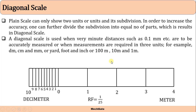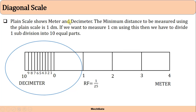A plane scale shows two units — meter and decimeter. We know one meter is equivalent to 10 decimeters. The minimum distance measurable using a plane scale is one decimeter. If we want to measure one centimeter, which is equivalent to 0.1 decimeter, we have to divide the first subdivision into 10 equal parts — and that's what we do in a diagonal scale.